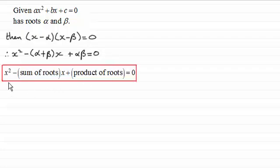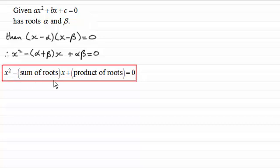This is something we'll be coming back to many times: any quadratic equation can be expressed in terms of its roots as x² minus the sum of the roots times x, plus the product of the roots, equals zero.